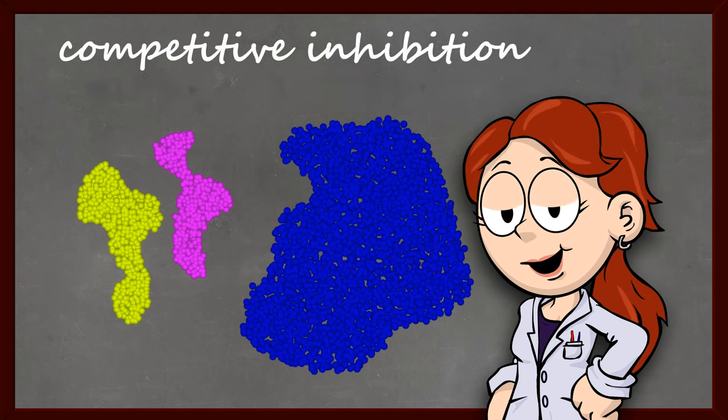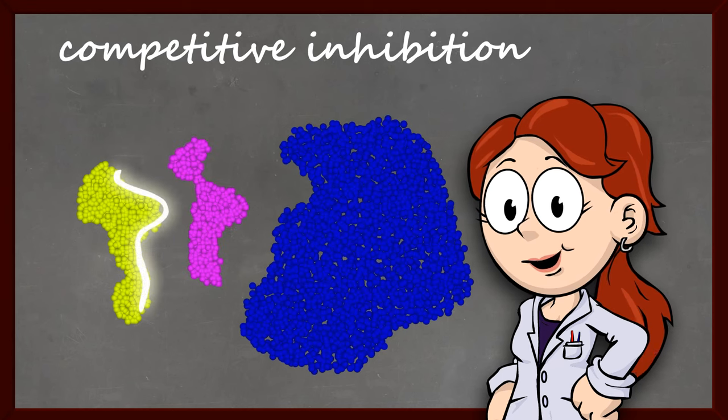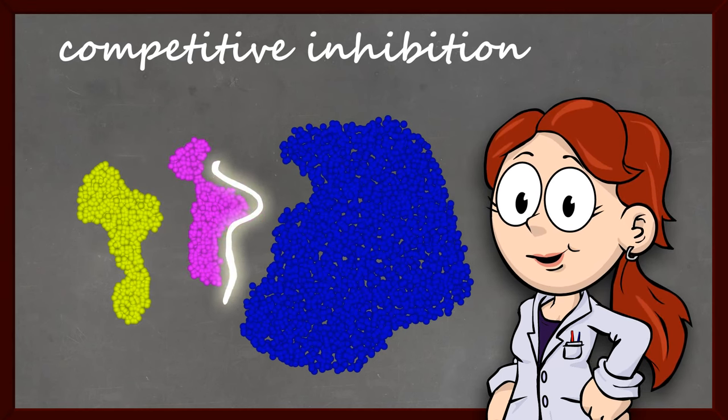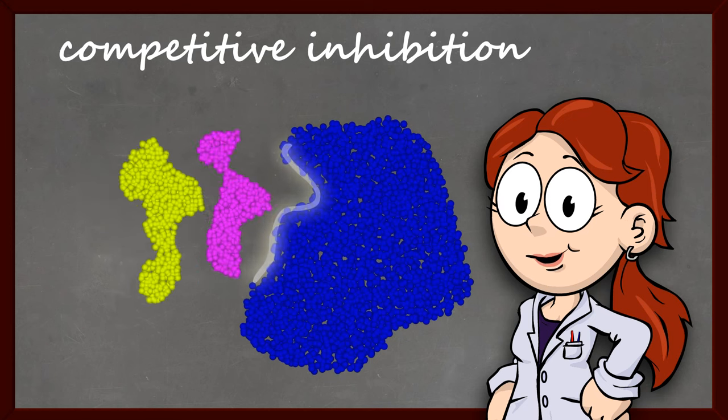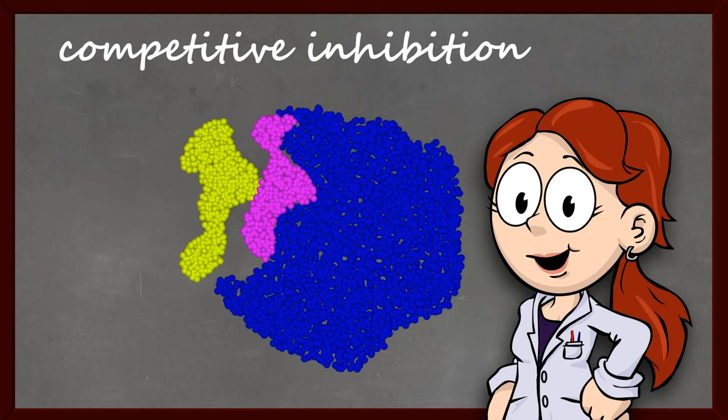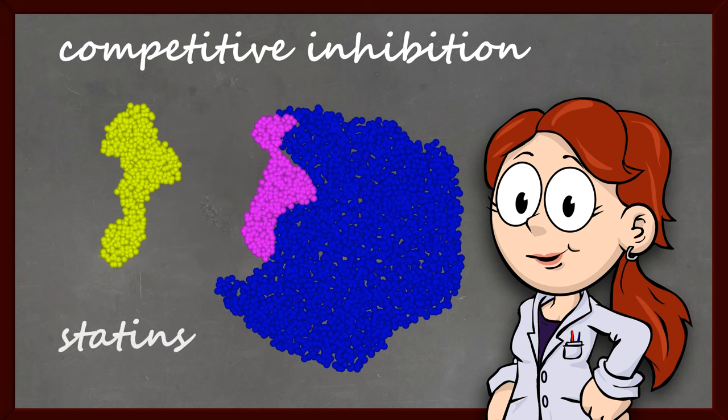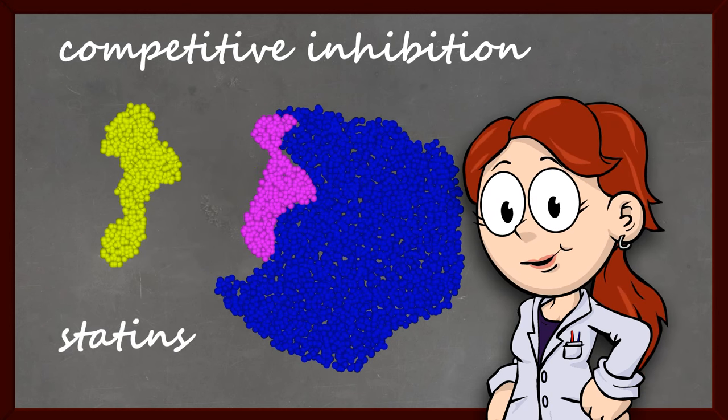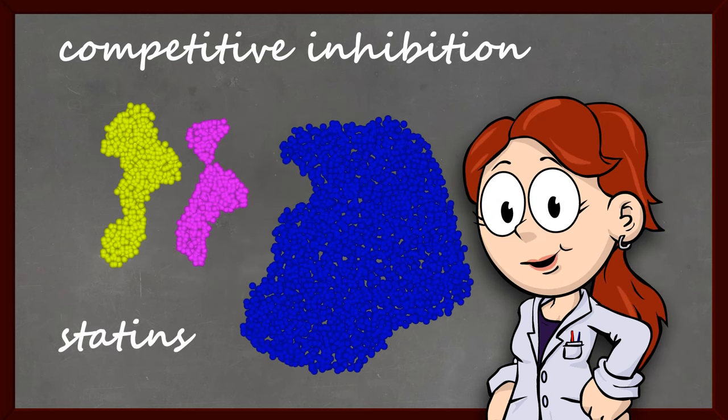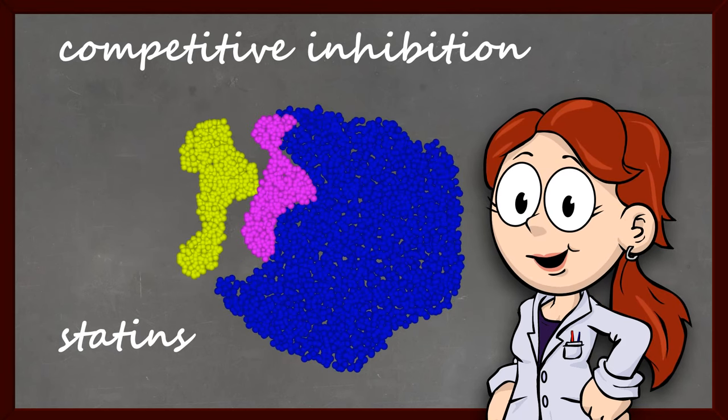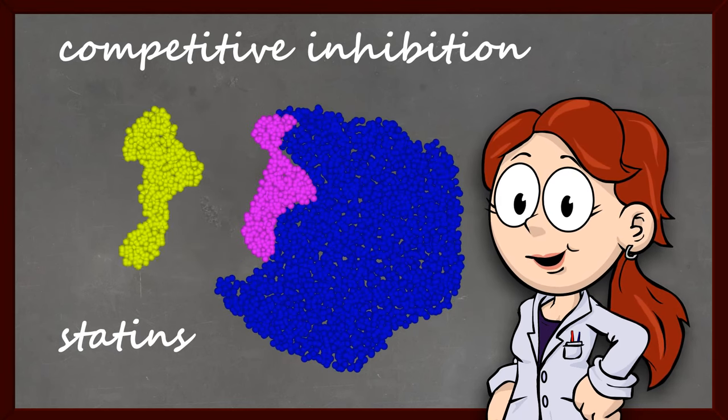Competitive inhibitors resemble the normal substrate for the enzyme, and bind at the active site of the enzyme. They therefore compete with the substrate for occupancy of the active site. An example of a competitive inhibitor is a family of drugs known as statins, such as Crestor and Lipitor, that are used to lower cholesterol levels. Statins function by competitively inhibiting an enzyme in the body that is required for the synthesis of cholesterol.